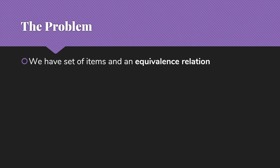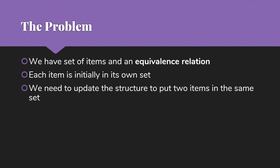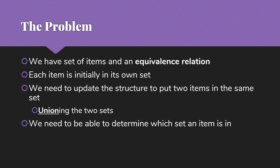The problem we're trying to solve with this data structure is that we have a set of items and some sort of equivalence relation — for example, things that are in the same room. Each item is initially in its own set, but then we need to update the structure to put two items in the same set and union those two sets together. We also need to be able to determine which set an item is in, which we'll call finding the item.